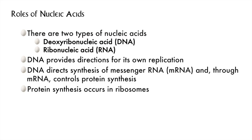DNA is the way information is encoded to direct cellular function so that new cells act just like old cells. DNA also makes a copy of itself in a similar but different molecule called messenger RNA, which controls the primary structure of polypeptides. Protein synthesis occurs at organelles called ribosomes in the cell.